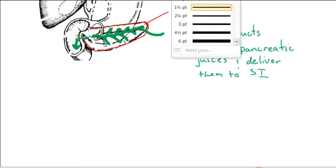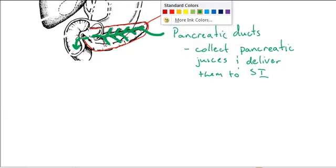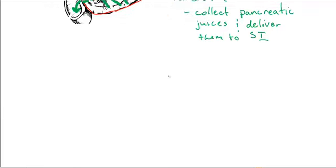And today we're going to look at the function of the pancreas, which falls into two key functions or two classes of functions. The first is what we call exocrine.